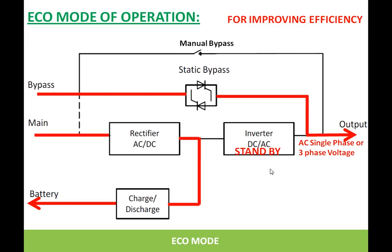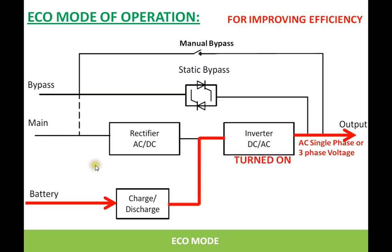When the UPS needs to switch to inverter mode — for example when incoming power fails — the inverter is turned on and the battery bank supplies the required voltage; the inverter converts DC to AC and feeds it to the output. The advantage of this mode is improved overall UPS efficiency. However, one factor must be considered: there is a transfer time involved when switching from static bypass to inverter, in the order of 10 to 15 milliseconds. This must be addressed — if the load can accept this transfer time, you can use this mode; otherwise you should not.